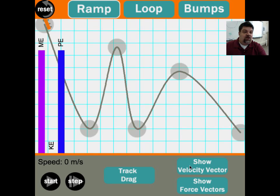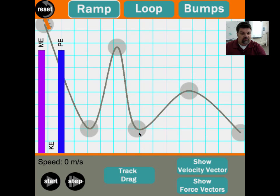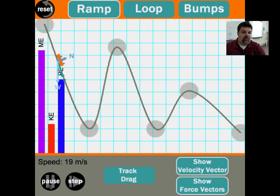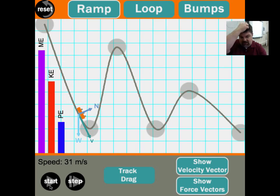When I hit start, the coaster will go through my little roller coaster track that I made. But I want to turn on the velocity vector and the force vectors at first. And so I'm going to hit start, and then I'm going to pause. So now right here, notice that the potential energy, which was originally up here, has decreased, and the kinetic energy has increased.